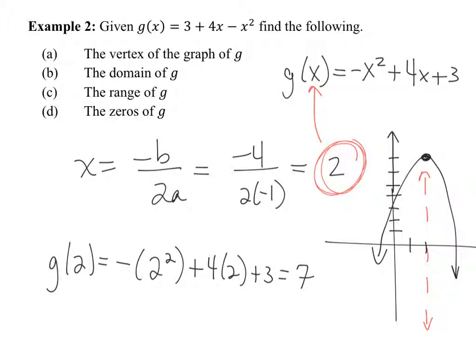What's the range? Look at the y values — the height of the graph. Go to the peak: that's the highest y value. Anything above there the graph does not cross. The graph starts at 7 and protrudes downward infinitely — it doesn't stop. It continues downward always from 7 down. So part C, the range is y less than or equal to 7.